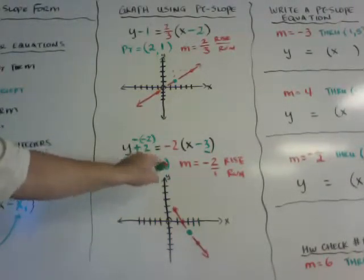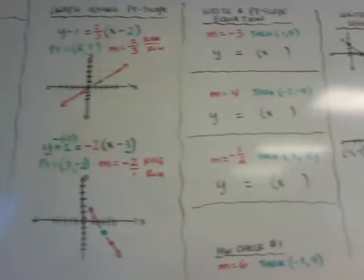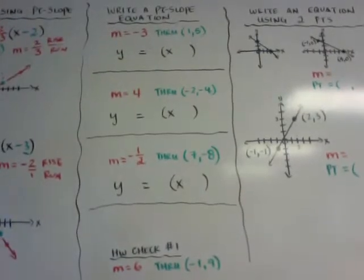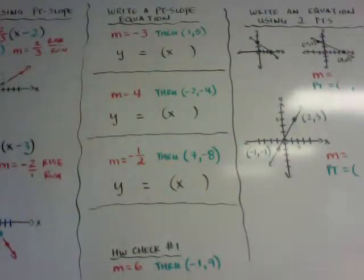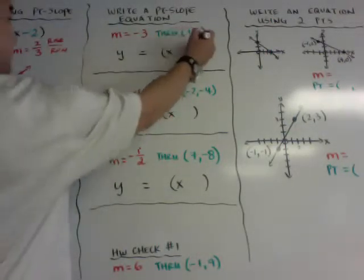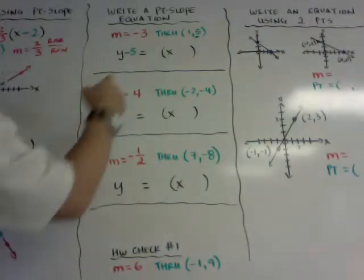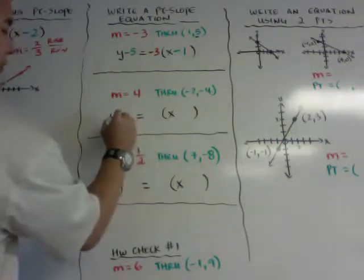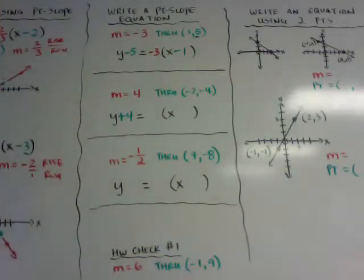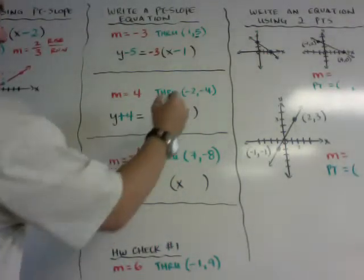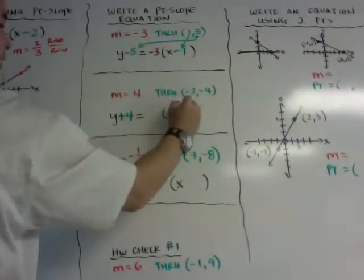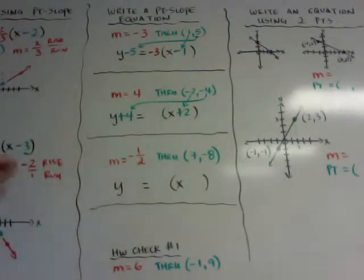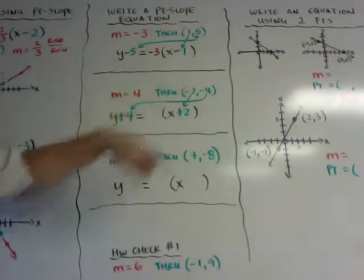To write an equation in point-slope form when given the slope and a point, it's super fast. Take the x-coordinate, put it with x minus that value; take the y-coordinate, put it with y minus that value; then plug in the slope. If the x-coordinate is negative 4, remember it becomes minus negative 4, which turns into plus 4. If y-coordinate is negative 2, it becomes plus 2. Make sure x goes with x and y goes with y — people sometimes mix them up and put the first coordinate in the wrong spot.